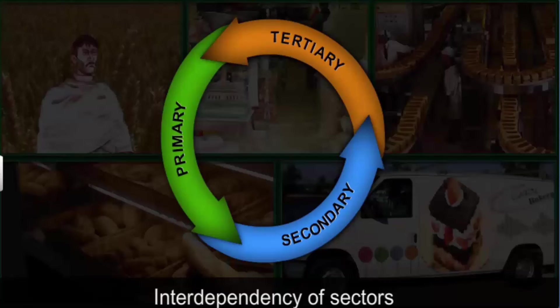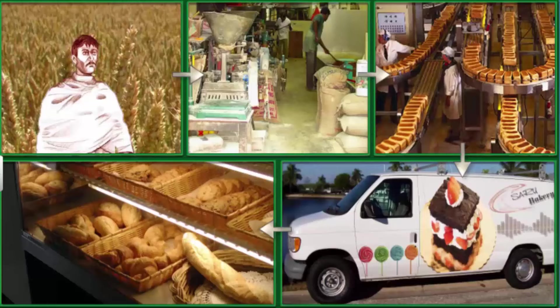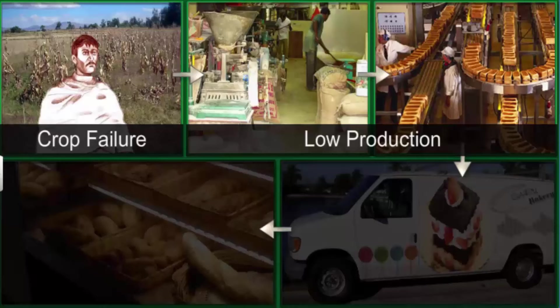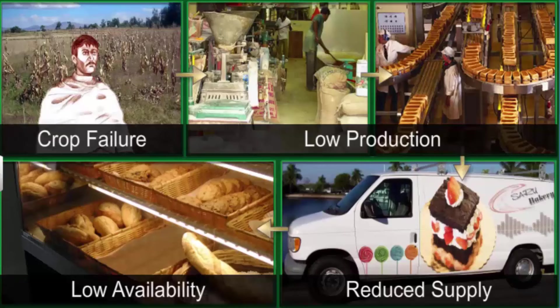Though the activities of the primary, secondary, and tertiary sectors appear quite different, they are interdependent on each other. A failure of wheat crop in the primary sector would affect the production of flour and bread in the secondary sector, leading to reduced supply and availability of bread in the tertiary sector.